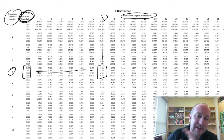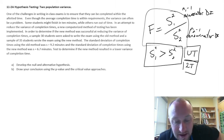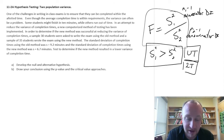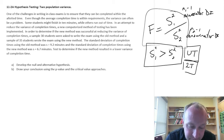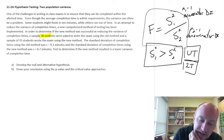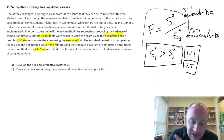Let's get into our problem. We're looking at writing in-class exams, and the difficulty is making sure they can be completed within the allotted time. Even though the average completion time might be within requirements, the variance can be a problem — some students finish in a few minutes, others might completely run out of time. To reduce the variance, a new computerized method of testing has been implemented. We have a sample of 30 students using the old method and 35 students using the new method. The standard deviation for the old method is 9.2 minutes and for the new method 6.7 minutes. We want to test whether the new method resulted in a lower variance than the old method.